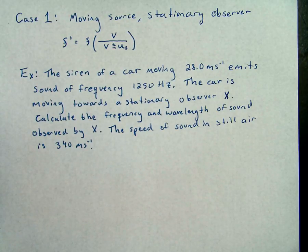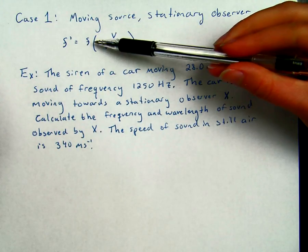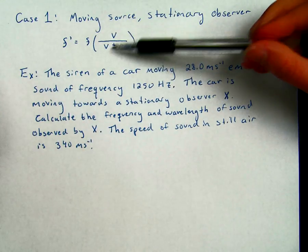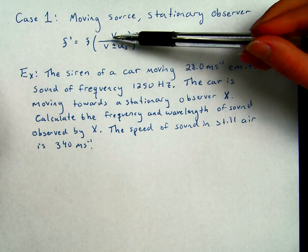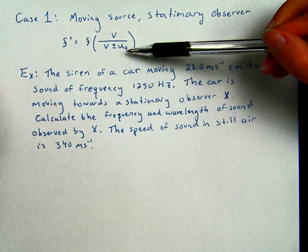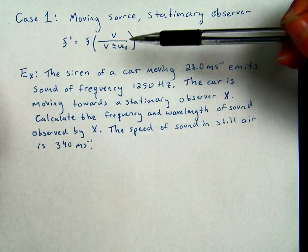Okay, so case one: moving source, stationary observer for the Doppler effect. As you can see from our formula, we have F prime. That is where, once again, we are looking for the observed frequency compared to F, the actual frequency of the source, the speed V of sound in still air, and then whatever our speed of our source is.